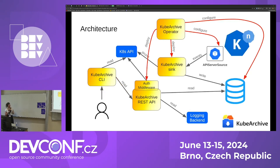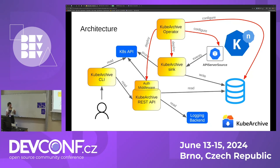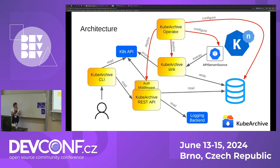The final item is going to be a deployer. We need something to help us configure the API Server Source resources in different namespaces, reconcile the configuration provided by the user, configure the schema in the database, deploy kubearchive sink, and deploy the kubearchive REST API. We want a controller that reconciles some custom resources — this is going to be a Kubernetes operator. As a side note, we are currently using Helm charts in the development phase for integration tests, but we're working on the kubearchive operator too.